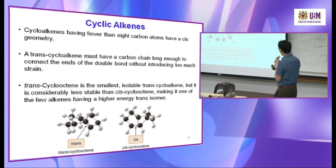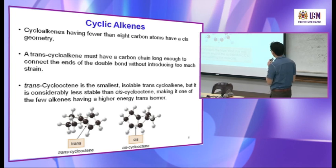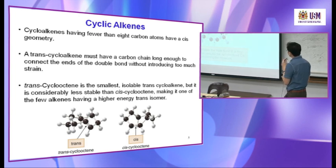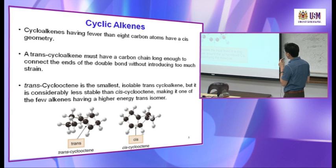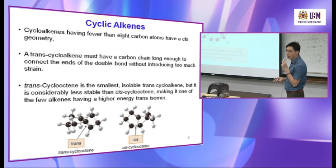Cyclooctyne requires at least 8 carbons. Smaller rings create too much strain at the triple bond. With 9 or 10 carbons, the strain is less.